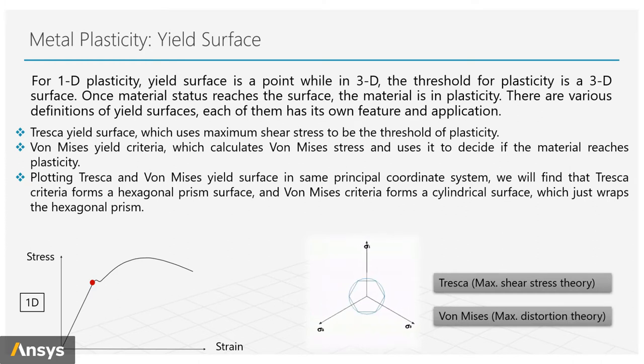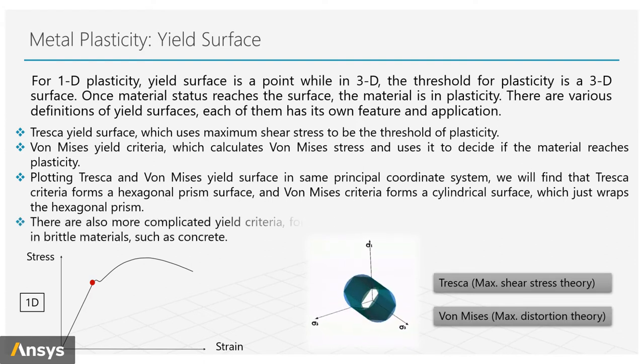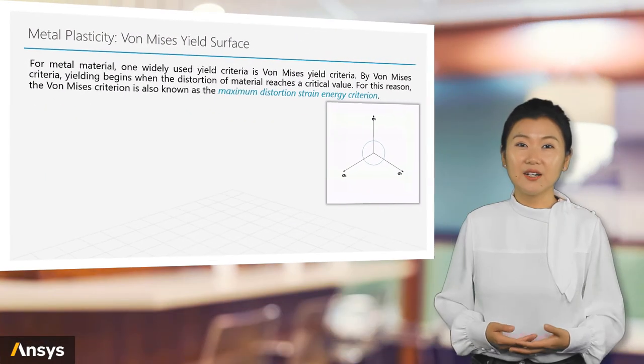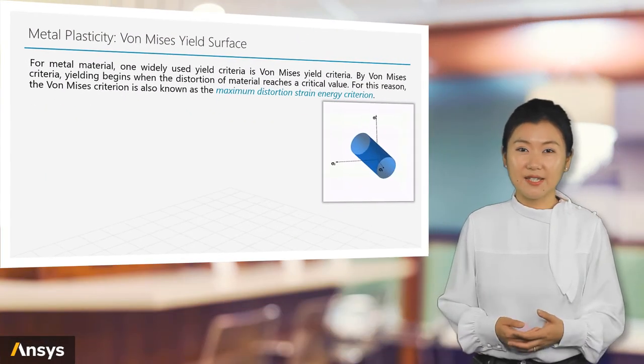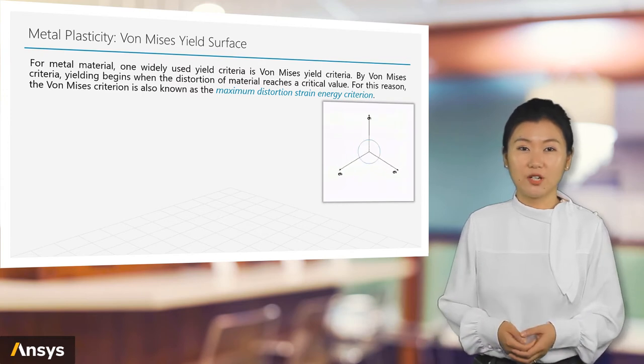If we plot Tresca and Von Mises yield surfaces in the same principal coordinate system, we'll find that Tresca criterion forms a hexagonal prism surface, and Von Mises criterion forms a cylindrical surface which just wraps the hexagonal prism. There are also more complicated yield criteria, for example the Drucker-Prager criterion, which is mostly used in brittle materials such as concrete.